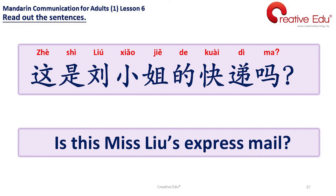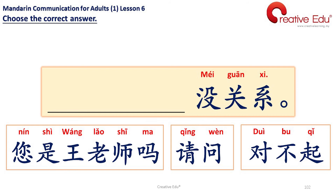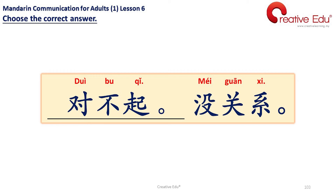这是刘小姐的快递吗？Is this Miss Liu's express meal? 这是刘小姐的快递吗？Number 3: 没关系。Choices: 您是王老师吗？The answer is: 对不起，没关系。I'm sorry. It doesn't matter. 对不起，没关系。